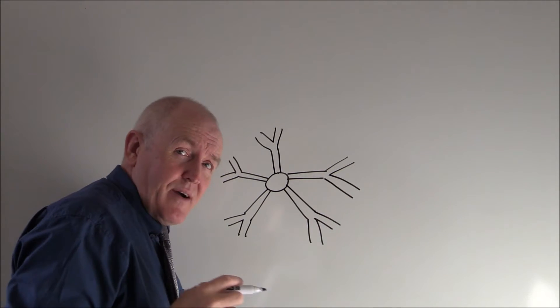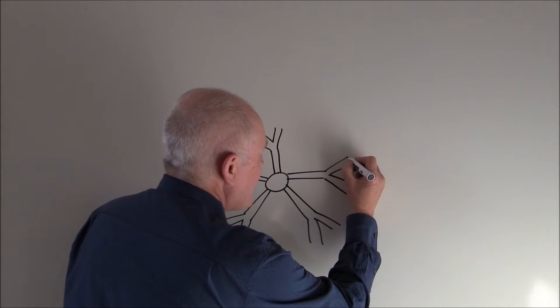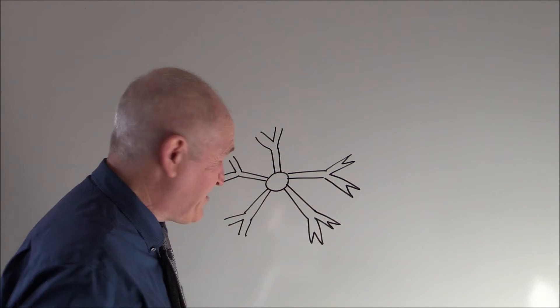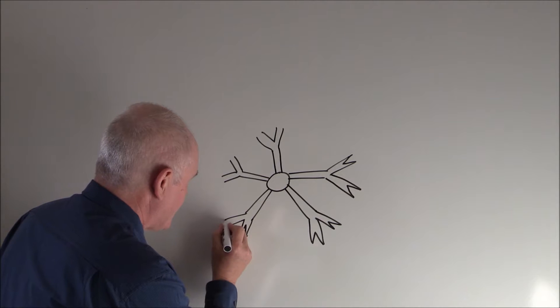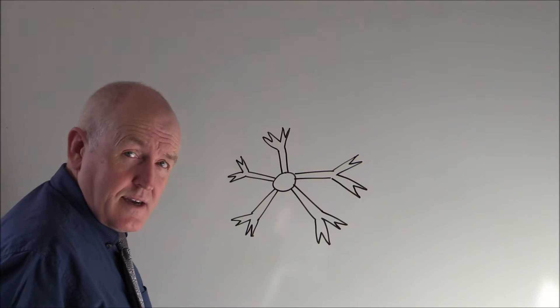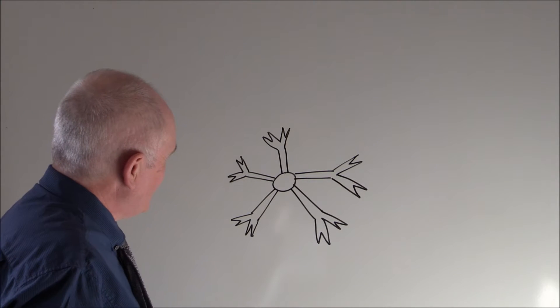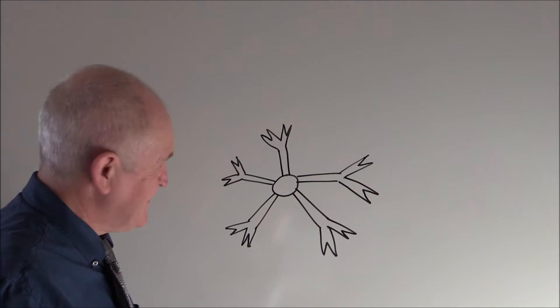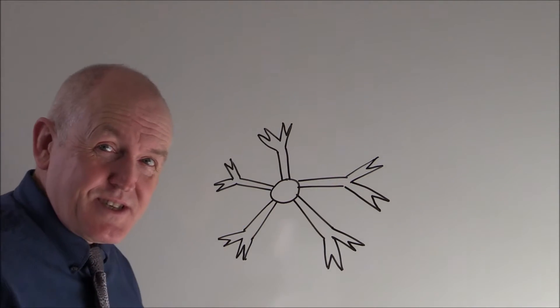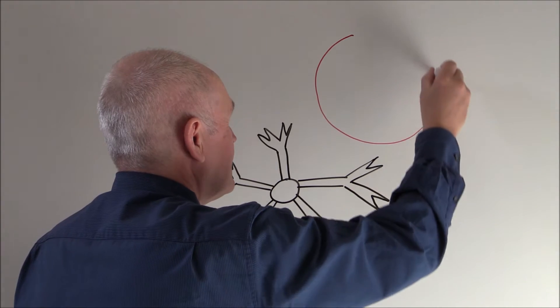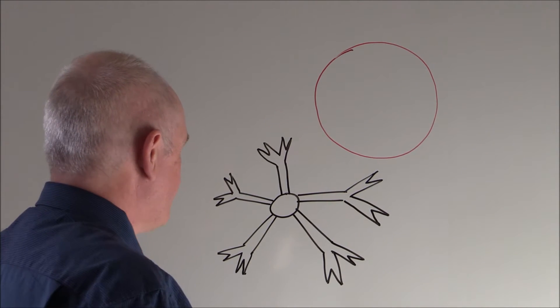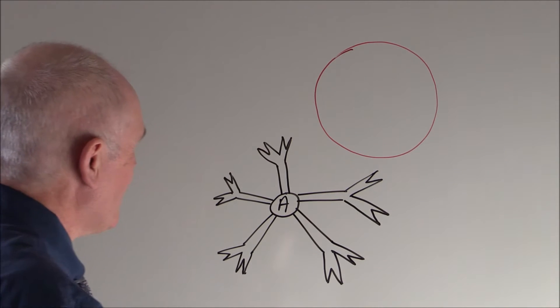Now the thing about antibodies is they are specific. The end of the antibody is a specific shape like this to interact with a particular antigenic molecule. The one we've drawn here is an anti-A antibody. What blood group is this going to be? Well, if there's anti-A antibodies, this person is going to be blood group B.